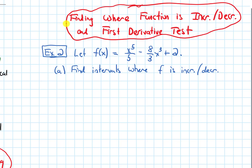In this video, we'll talk about how to find where a function is increasing and decreasing and what the first derivative test is. I'm going to start with an example in which f of x equals x to the 5 over 5 minus 8 thirds x to the 3rd plus 2. In part A, I want to find the intervals where f is increasing and where it's decreasing.